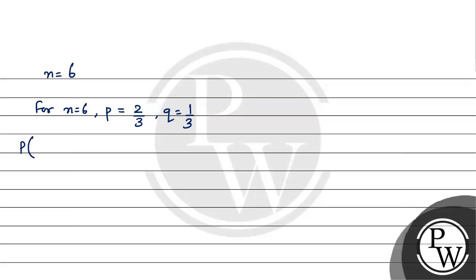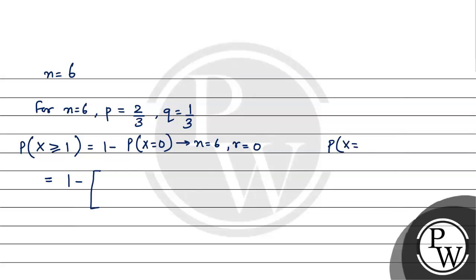For probability P of X greater than or equal to 1, it would be 1 minus P when X is equal to 0. Since we want greater than or equal to 1, from the total we subtract only the probability of 0, and that gives our answer. So applying the NCR formula: P of X equal to r is nCr multiplied by P to the power r multiplied by Q to the power n minus r.